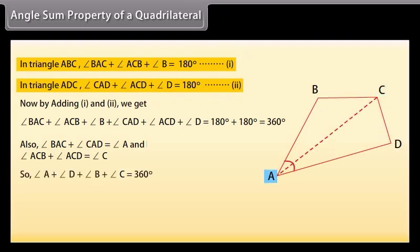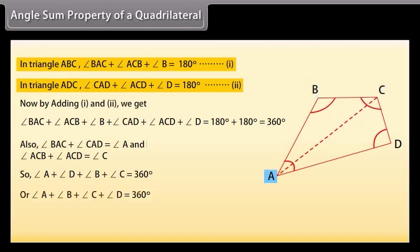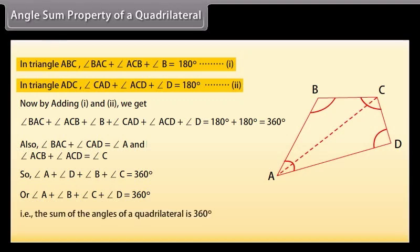So, angle A + angle D + angle B + angle C = 360°. Or, angle A + angle B + angle C + angle D = 360°. That is, the sum of the angles of a quadrilateral is 360 degrees.